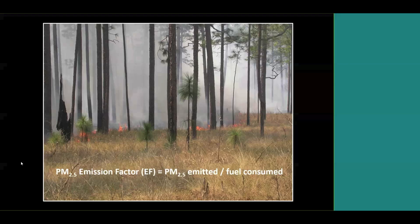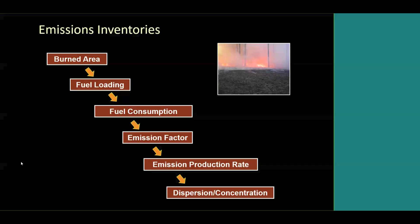PM emission factors are simply the amount of particulate matter emitted per fuel consumed during a fire. As probably everyone in this group knows, it's an important part of developing emissions inventories, where we take burned area and multiply by fuel loading, then by fuel consumption, and the emission factor tells us how much emissions there are per fuel consumed. From Tall Timbers' perspective, it's important from a conservation standpoint to ensure that agencies regulating prescribed burning are getting numbers as close to real ones as possible for appropriate science-based regulation.